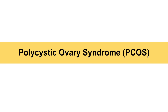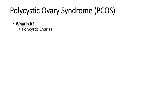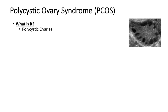So to begin, what is polycystic ovary syndrome? Well, as the name suggests, it involves polycystic ovaries — so ovaries with multiple cysts. And you can actually see this on an ultrasound of a patient's ovaries. You can actually see these little black holes; they're actually cysts within the ovary.